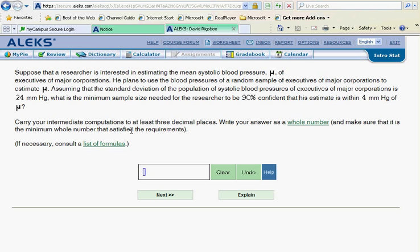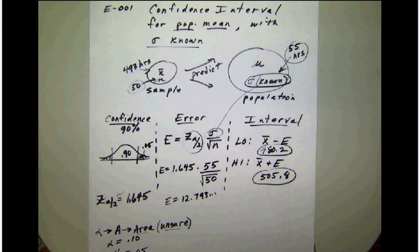Notice that we have to write the answer as a whole number and make sure that it is the minimum whole number that satisfies these requirements. As always, we have some notes on this, but before we look at them, let's go back and look at a series of notes that we took back on confidence intervals.